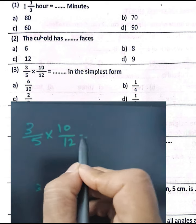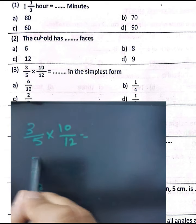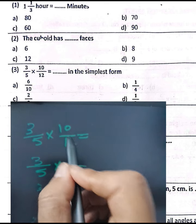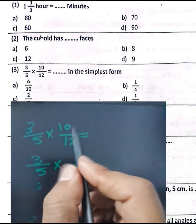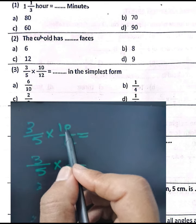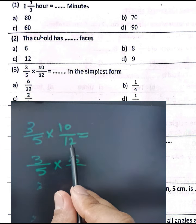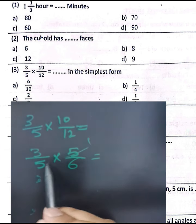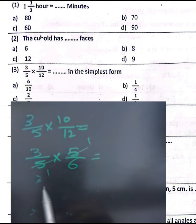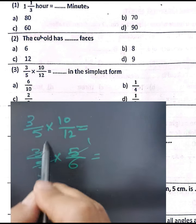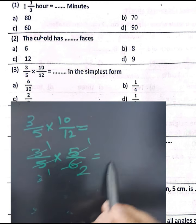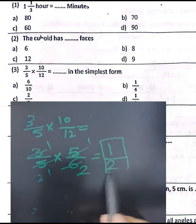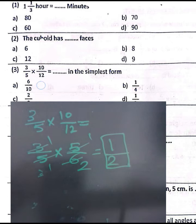Question number three: three-fifths subtracted by ten-twelfths in simplest form. First simplify ten-twelfths by dividing by 2: ten divided by 2 equals five, twelve divided by 2 equals six, giving five-sixths. Then simplify further: five divided by five equals one, six divided by three equals two, giving one-half. The result is one-half. Choose letter D.